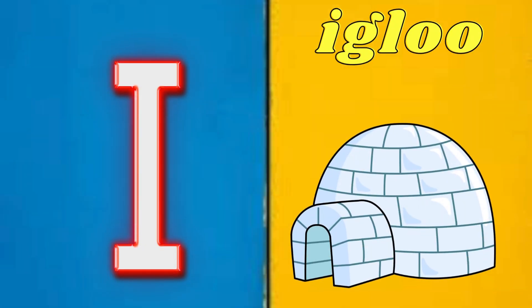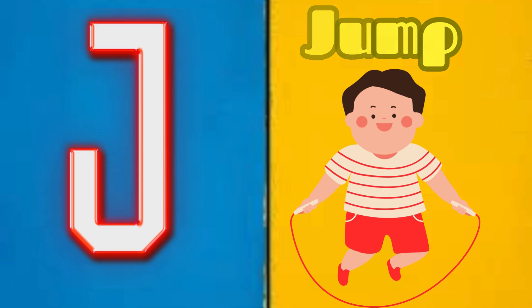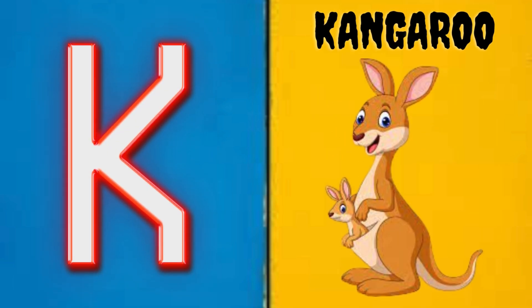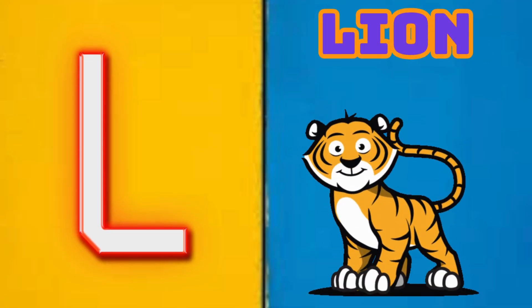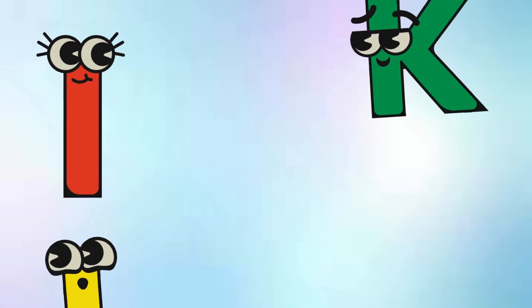I is for Igloo, I-I-Igloo. J is for Jump, J-J-Jump. K is for Kangaroo, K-K-Kangaroo. L is for Lion, L-L-Lion.